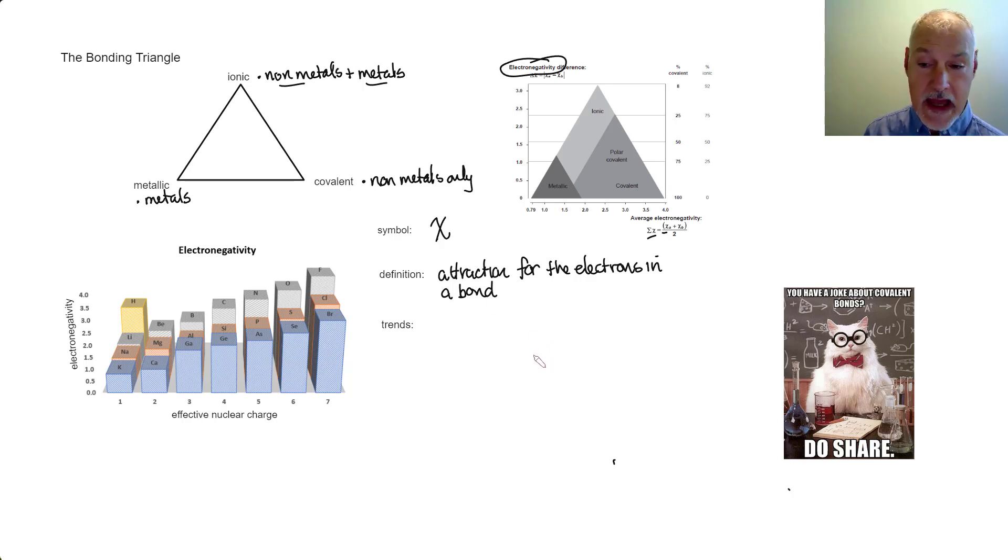And what are some of the trends and patterns we see in electronegativity? Well, let's explore a family or group, fluorine, chlorine, and bromine, which you can see here. As you move down the periodic table, we notice a reduction in electronegativity. That occurs because we have more energy levels, and the distance between the nucleus and the valence electrons, those that are involved in bonding, becomes greater.